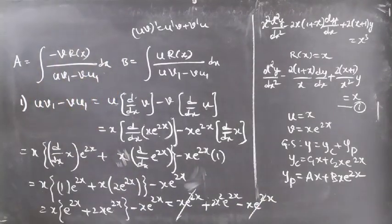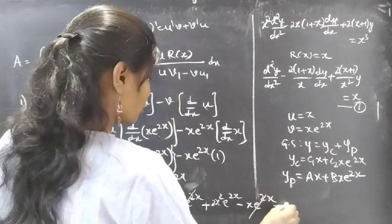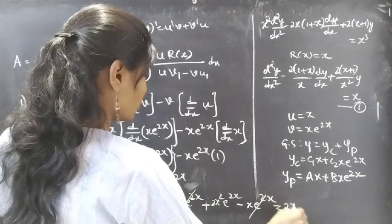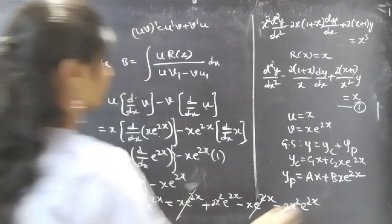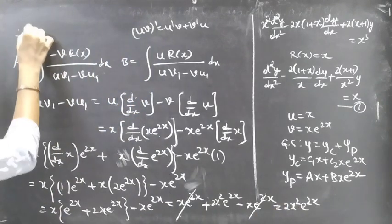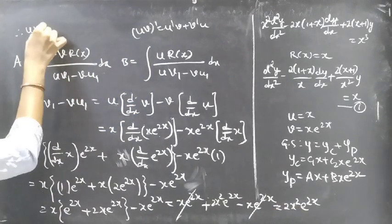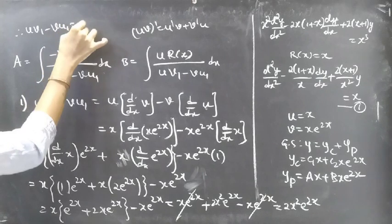The xe^(2x) terms cancel, giving uv₁ − vu₁ = 2x²e^(2x).